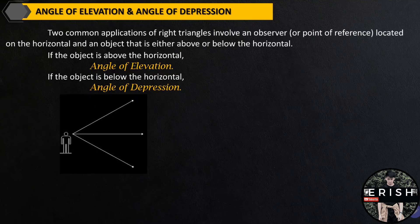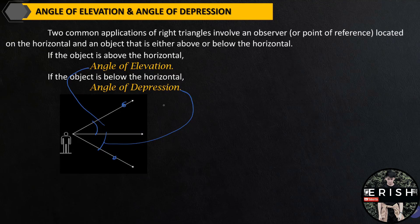This is our figure. Above the horizontal, this is the angle of elevation. And below the horizontal, that is our angle of depression. This is our line of sight. Be careful when interpreting the angle of depression — both the angle of elevation and the angle of depression are measured between the line of sight and the horizontal line.